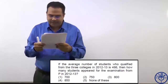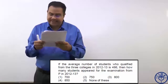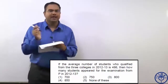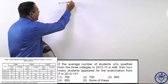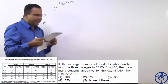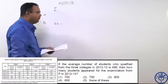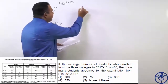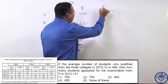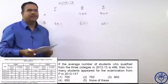Let us look at the next question. If the average number of students who qualified from three colleges in 2012-13 is 486, then how many students appeared for the exam from P in 2012-13? Let us look at the table for 2012-13. For P, we do not know the number of students appeared — students qualified is 64 percent. For Q, number of students appeared is 720 and number qualified is 60 percent. For R, number of students appeared is 840 and number qualified is 65 percent.